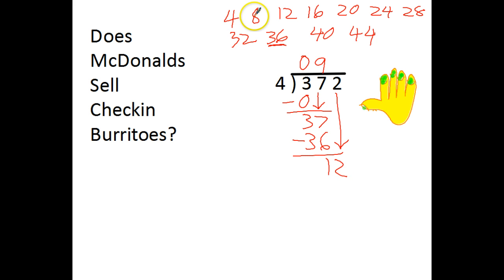How many 4's in 12? 1, 2, 3. 3 times 4 equals 12. When I subtract, there's nothing left.